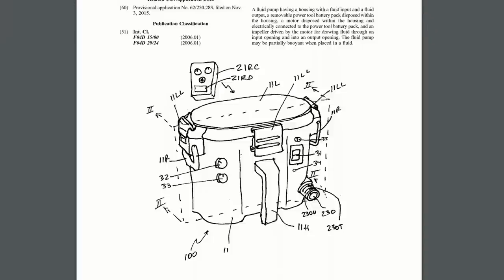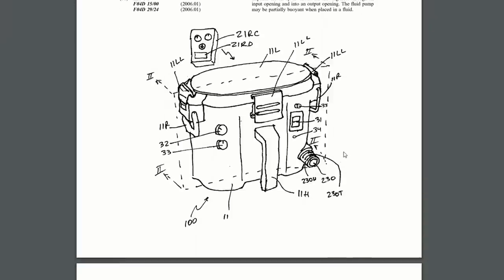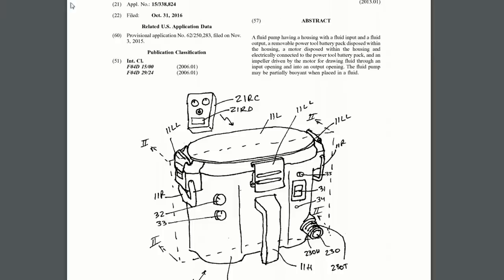This first one is a cordless floating transfer pump. This sketch on here looks like a literal back of the napkin sketch. It's super rudimentary, it's hand-drawn. I think they just had a bunch of good ideas and threw them together.